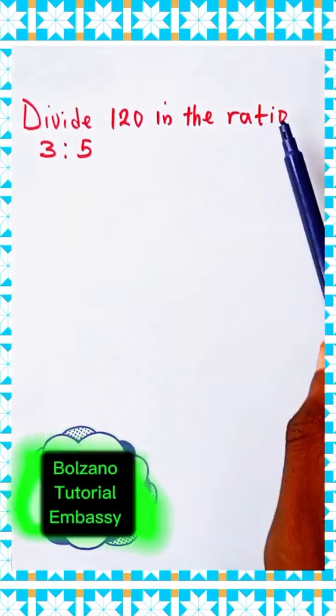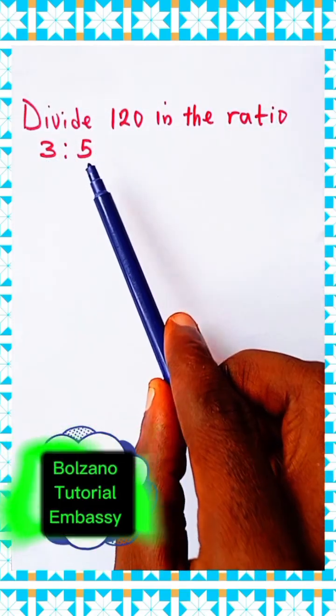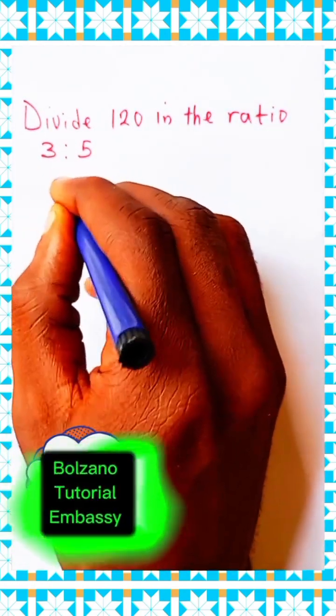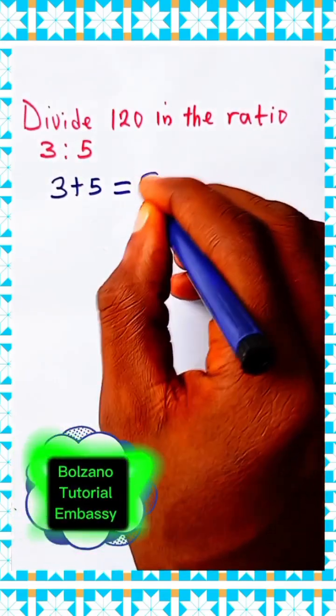Let us divide 120 in the ratio of 3 to 5. The first step: sum the ratios. 3 plus 5 is equal to 8.